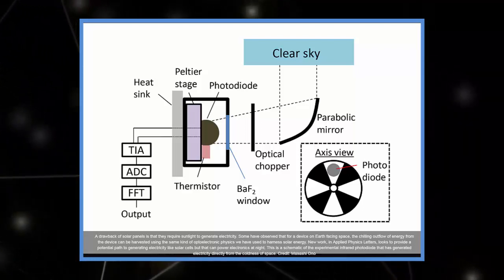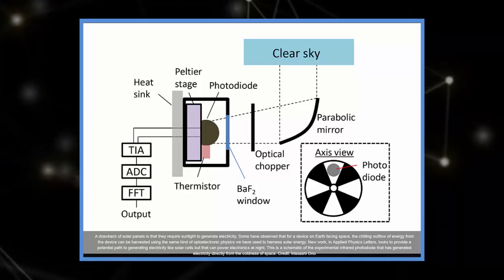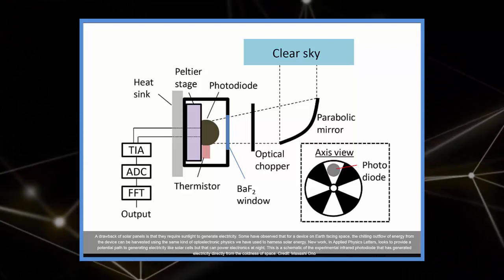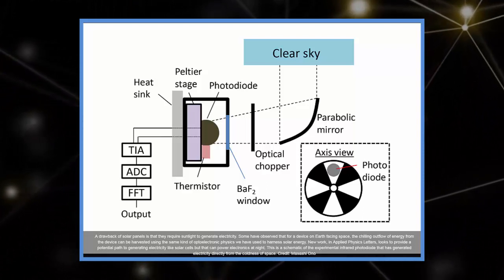The vastness of the universe is a thermodynamic resource, said Shan Hui Fan, an author on the paper. In terms of optoelectronic physics, there is really this very beautiful symmetry between harvesting incoming radiation and harvesting outgoing radiation.